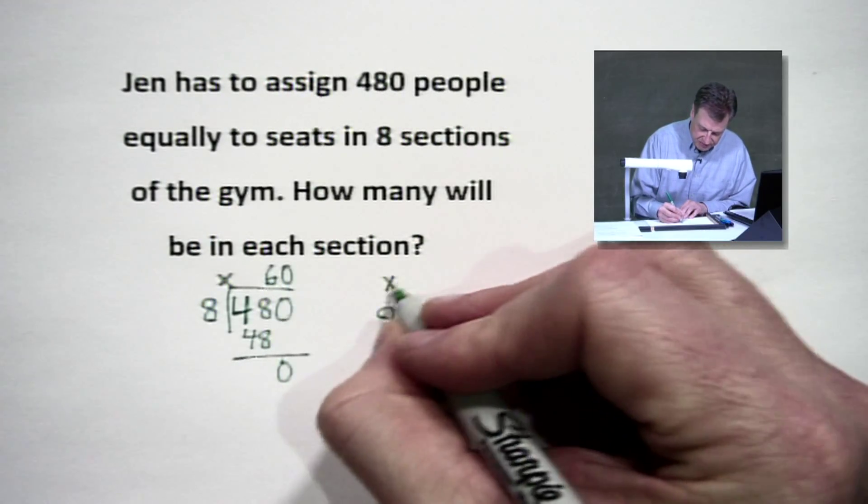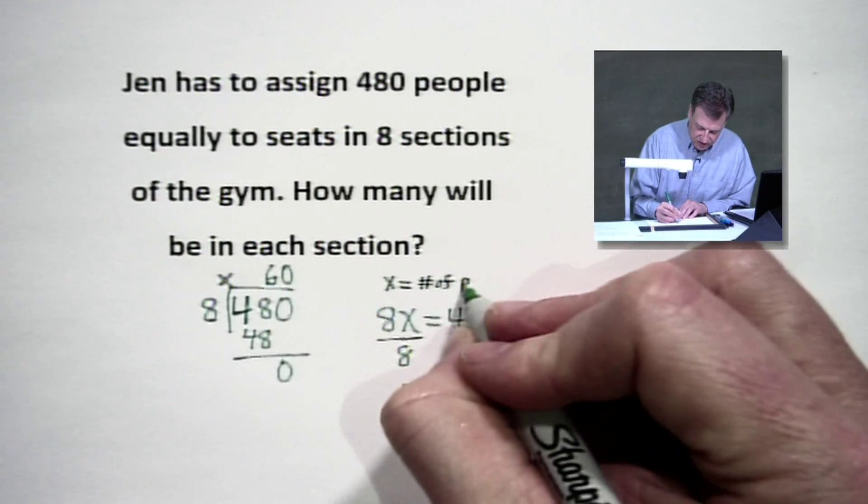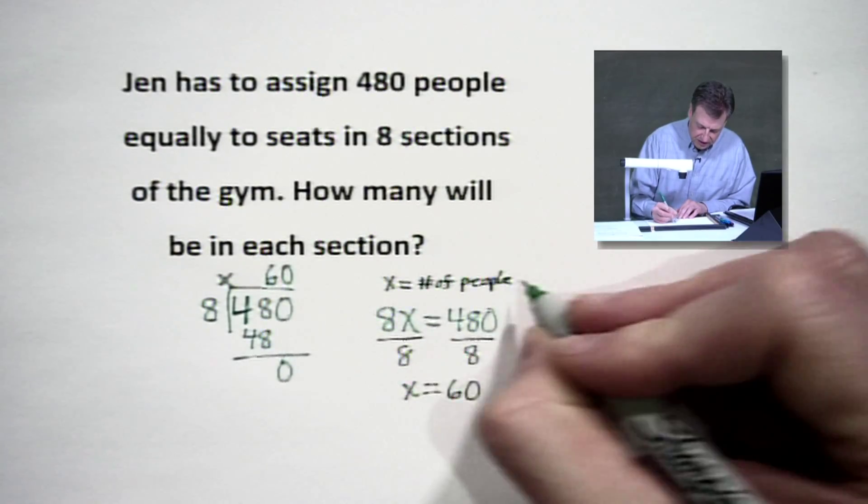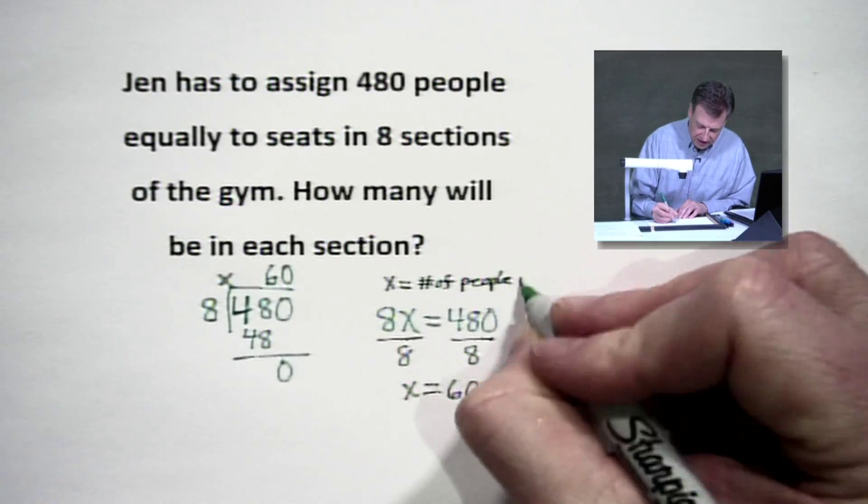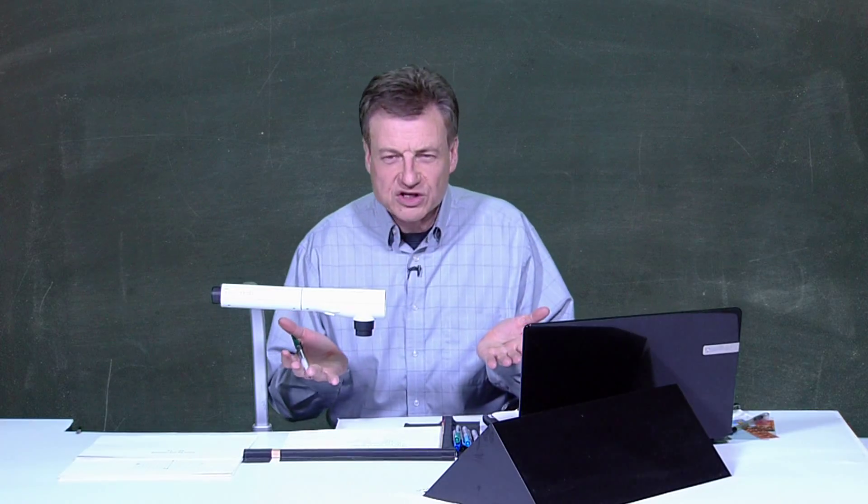What is that number? Well, look what we did right over here. We said that 60 times 8 gives us 480. And here we go again. How many times will 8 go into 480? We'll divide both sides by 8. And our x is going to equal 60.